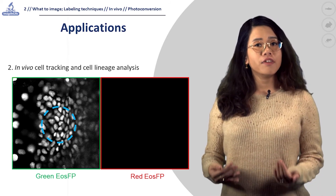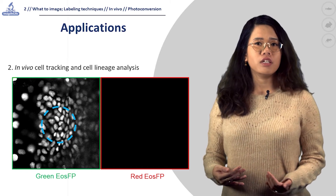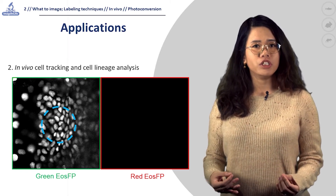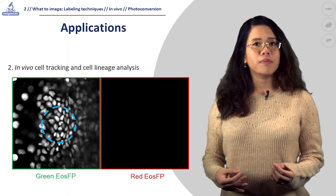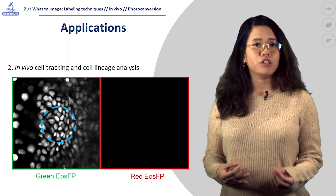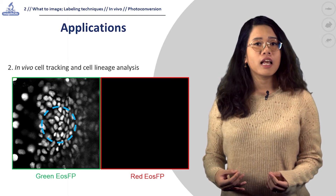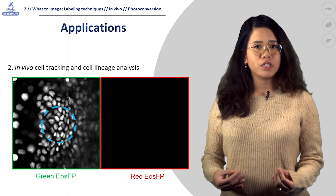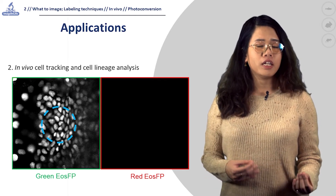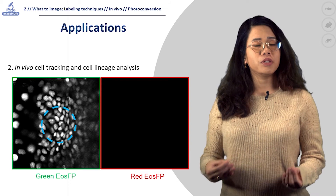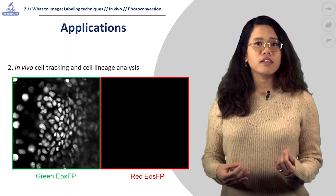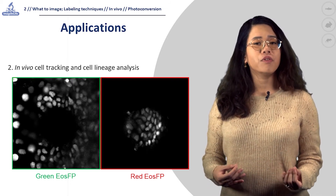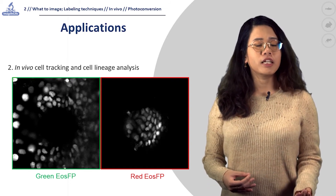And even then, to distinguish a small group of cells from its sister cells of the same origin might not be feasible with the transgenic line. Photoconvertible fluorescent proteins can provide an easier approach to these challenges. Here is an example of using photoconversion for in vivo imaging.